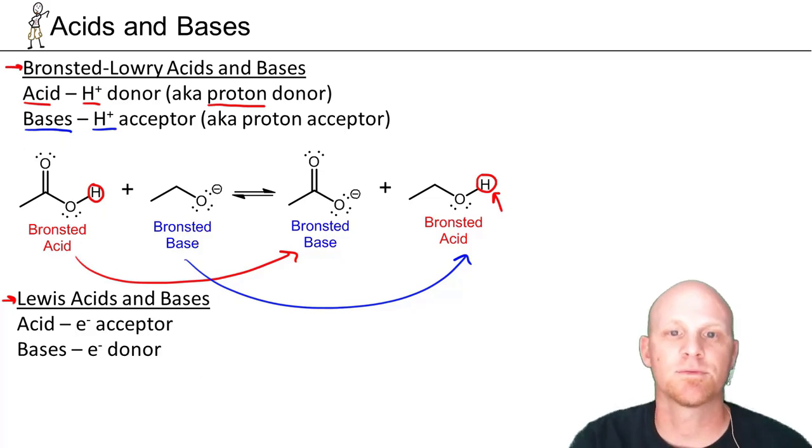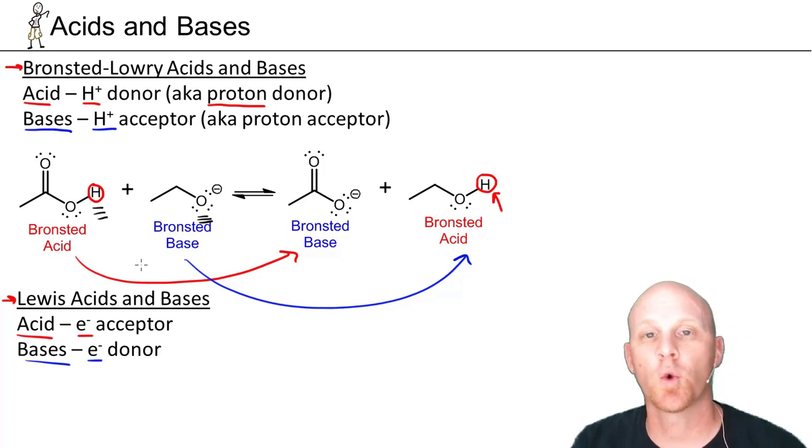Now Lewis looked at this from a slightly different perspective. He said, follow the electrons. Don't look at the H plus ion. Follow the electrons. He said an acid is actually an electron acceptor rather than a proton donor. And he said that the base is the electron donor rather than the proton acceptor. So if we look at where his ideology was. He said there's a new bond here forming between this oxygen and this hydrogen. And he wanted to know where are the electrons for that bond coming from.